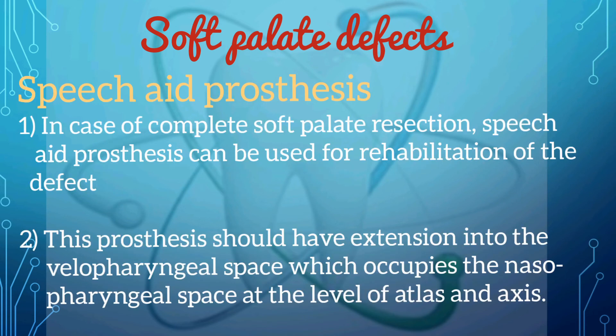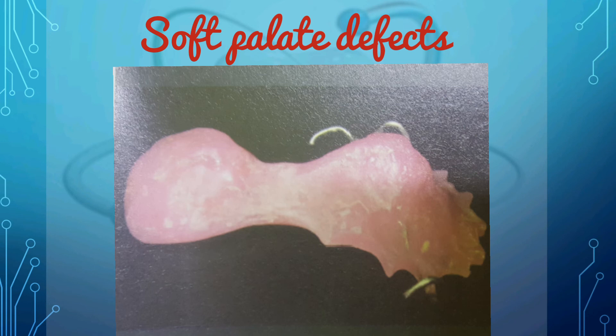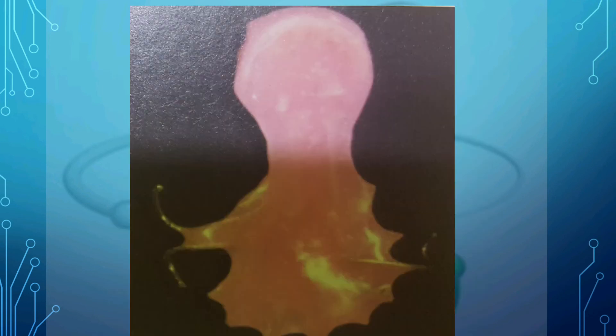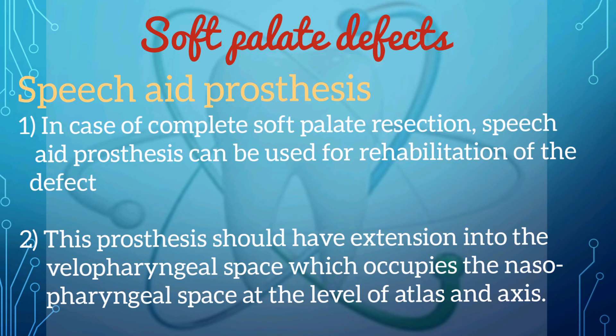The palatal lift prosthesis consists of an oral component that stabilizes and secures the prosthesis and an oropharyngeal extension that superiorly and posteriorly displaces the impaired soft palate. In cases of complete soft palate resection, a speech aid prosthesis is used for rehabilitation. A proper speech aid prosthesis must have extension into the velopharyngeal space, occupying the nasopharyngeal space at the level of the atlas and axis.